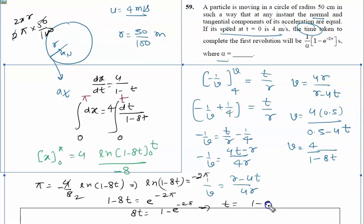Now you compare with this given equation: this is (1 minus e^(-2π)) divided by alpha. Comparing with this, the alpha is 8. The right answer to this problem is 8.